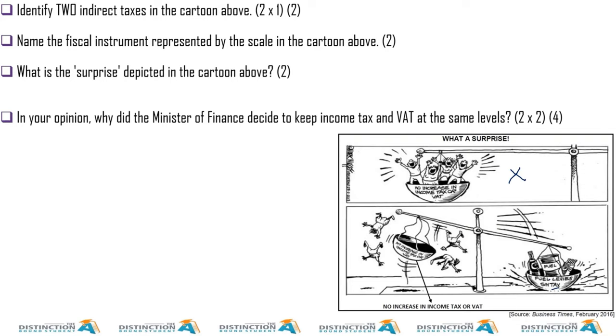Identify two indirect taxes in the cartoon above. Again, I think you can see that each time we have this topic public sector, it's common that they ask direct and indirect taxes. So make sure you always have examples in your head which ones are direct, which ones are indirect. Name the fiscal instrument represented. Okay, it's simple. That will be tax because we have two - the other one is government spending. So nothing says government spending in this cartoon, so that will be tax.